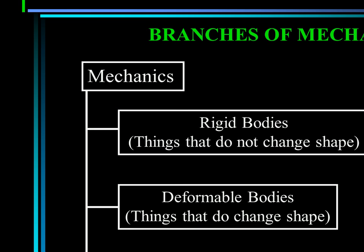The branches of mechanics include: one is the rigid body, dealing with things that do not change shape, which has two sub-branches — one is called statics and the other is called dynamics. Another branch is mechanics dealing with the deformed body, covering things that do change shape. The third branch is fluid, which also has two sub-branches: compressible and incompressible.